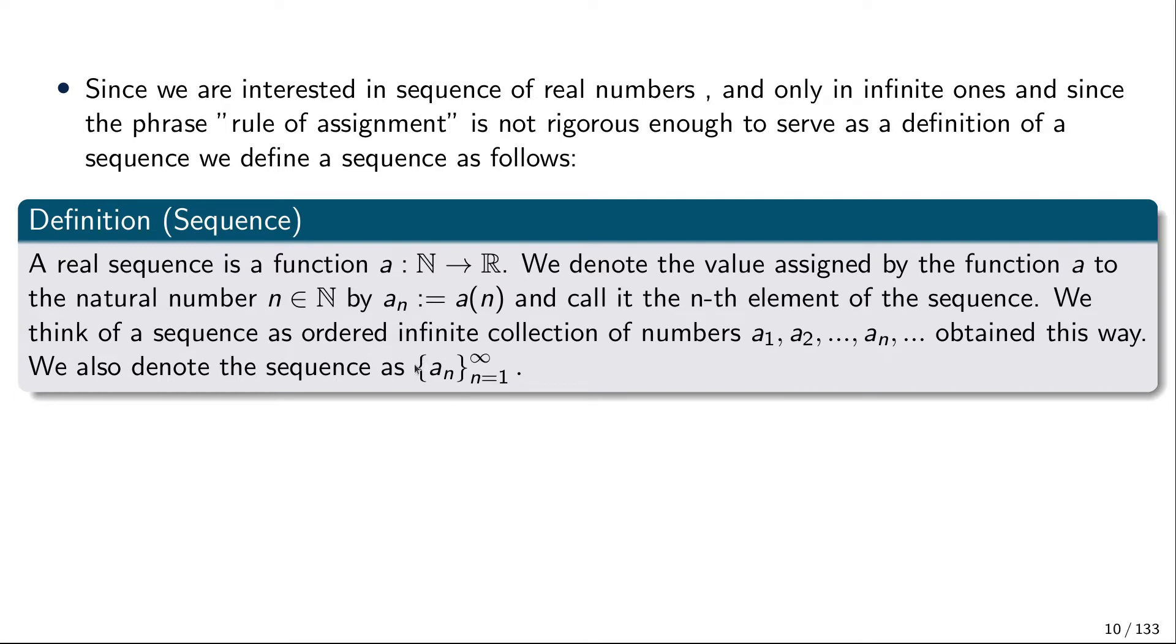This notation with curly brackets reminds us of set notation, but a word of caution: in sets only the elements matter, not the order. Two sets can be considered equal if they have the same elements but listed in different orders. Here the order matters. It's an ordered collection we have to keep in mind.